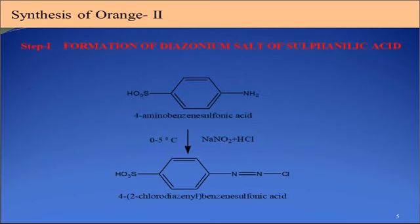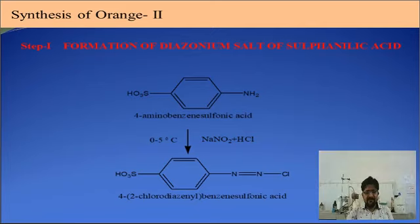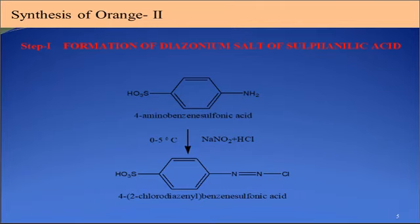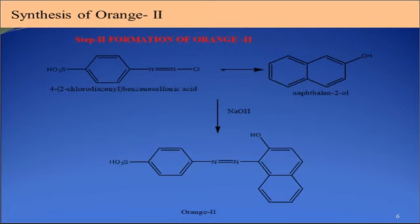The synthesis of Orange 2 has two parts. Part one, Step 1: formation of diazonium salt of sulfanilic acid. Sulfanilic acid reacts with sodium nitrite and hydrochloric acid at 0 to 5 degrees Celsius temperature, giving diazonium salt of sulfanilic acid.